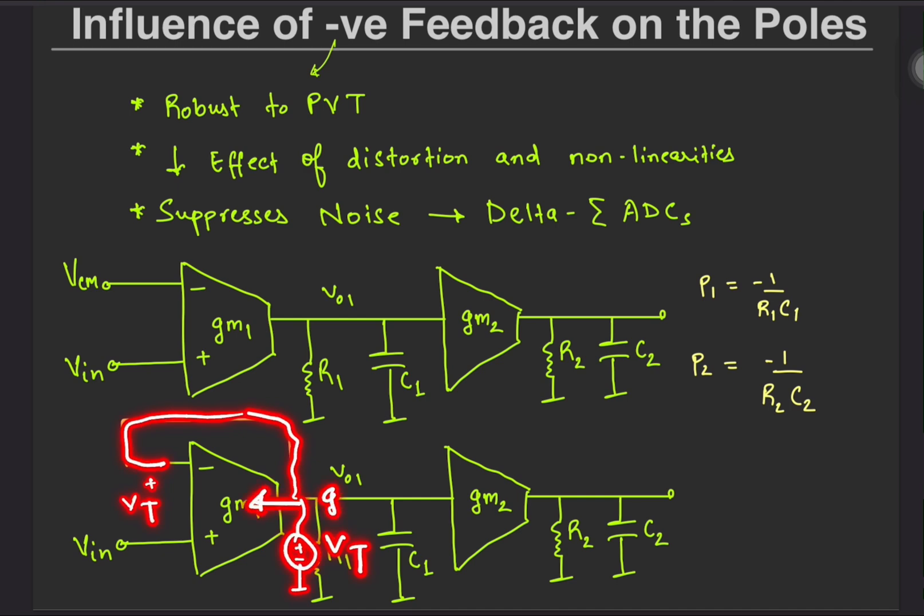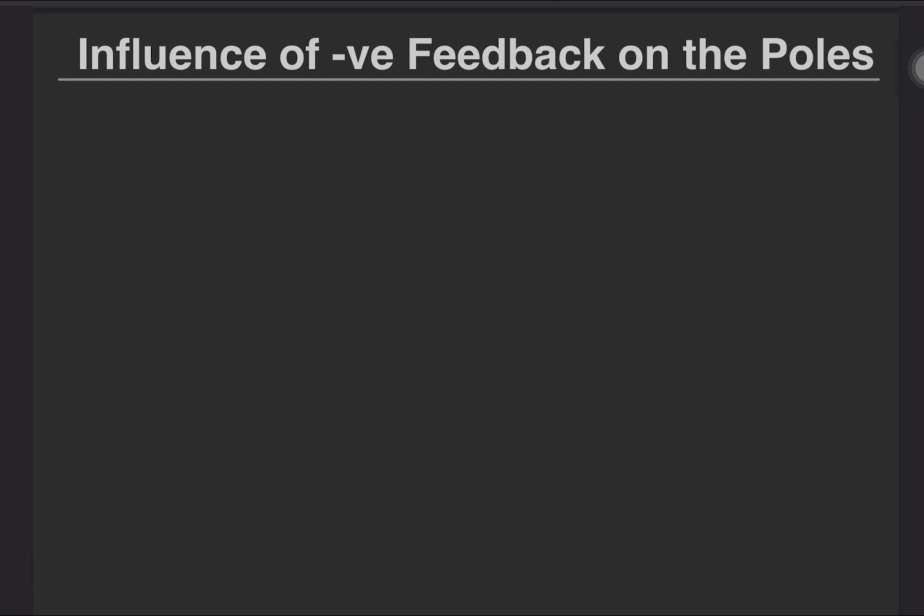So we have 1 by GM1 in parallel with R1 leading a total resistance of R1 over 1 by GM1 R1 plus 1.